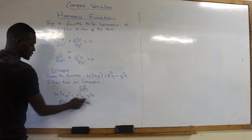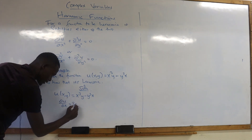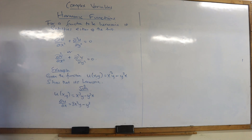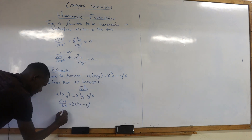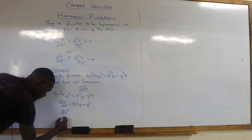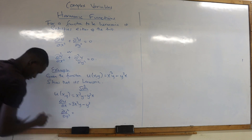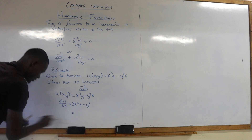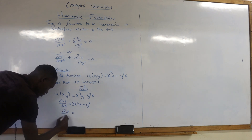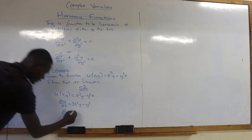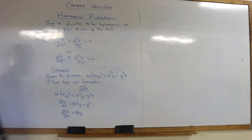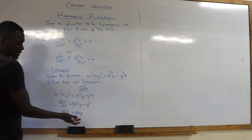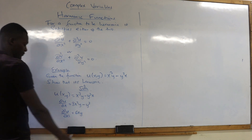Then for the second derivative, d²u/dx²: differentiate again. We have 6xy. There is no x variable in the second term, so you treat it as a constant. When you differentiate a constant, it gives you zero.